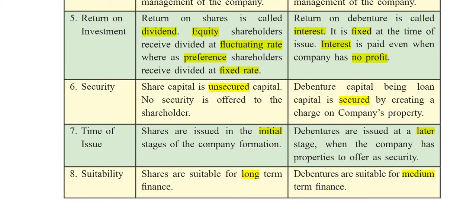The sixth point is security. Share capital is unsecured capital — no security is offered to the shareholder. When people give money to the company through shares, no charge on assets is created, so it is unsecured capital. On the other hand, debenture capital, being a loan capital, is secured by creating a charge on the company's assets or property. If necessary, the company will sell those assets to repay the debenture holders. So debenture is secured by a charge on the company's property.